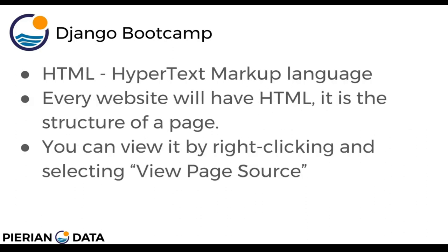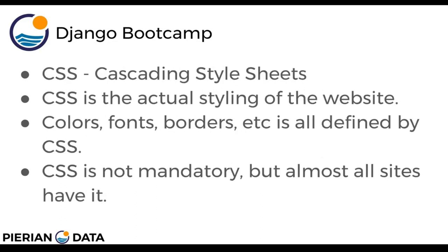HTML is Hypertext Markup Language and every website will have it — it's the structure of the page. You can actually view it by right-clicking and selecting 'View Page Source' in Chrome on any website. Then there's CSS, which is Cascading Style Sheets — it's the actual styling of the website: colors, fonts, borders, etc. CSS is not mandatory but almost all sites use it to make the website look good.